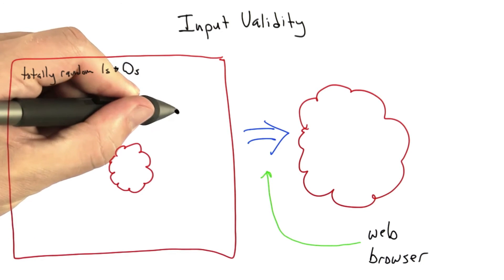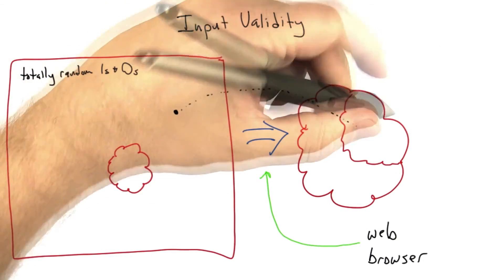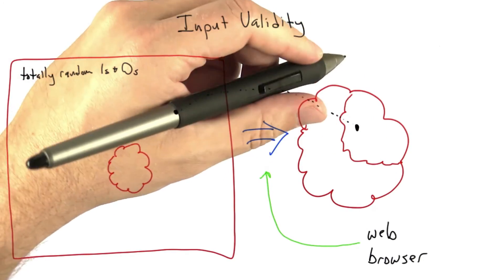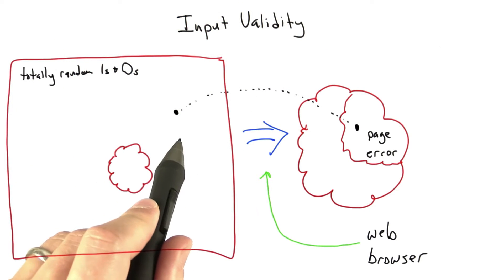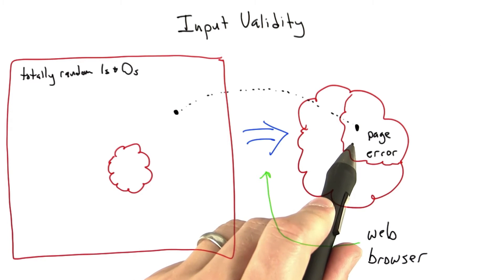And if we take one of these other inputs and hand it to the web browser, it's going to be mapped to a part of the output space that corresponds to malformed HTML. And one thing we might ask is, isn't that a good thing to test web browsers with completely invalid inputs?